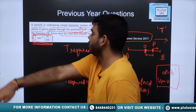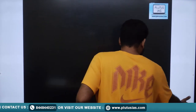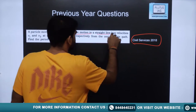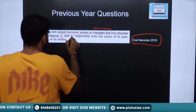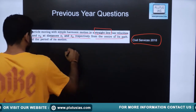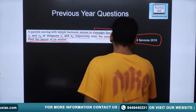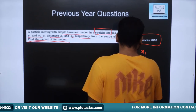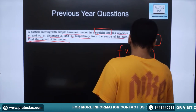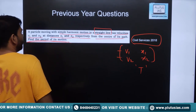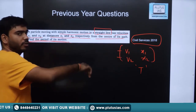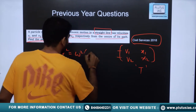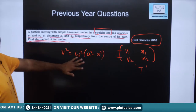Next question — asked in 2018. A particle moving with Simple Harmonic Motion in a straight line has velocities v₁ and v₂ at distances x₁ and x₂ respectively from the center of its path. We need to find the period of its motion. We will use the basic relation between velocity and position: v² = ω²(a² − x²).